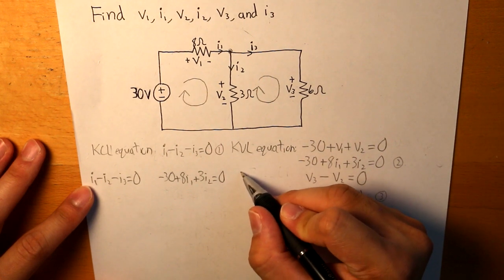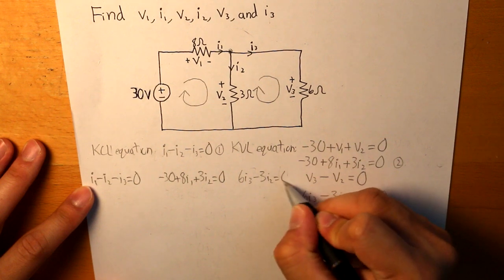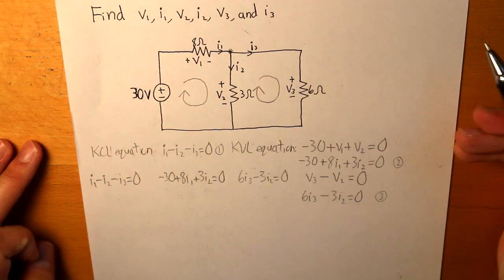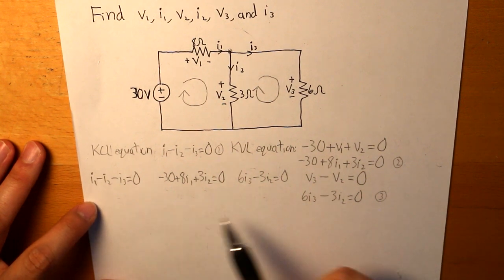And finally, 6I3 minus 3I2 is equal to 0. Now, let's solve one of the currents first.